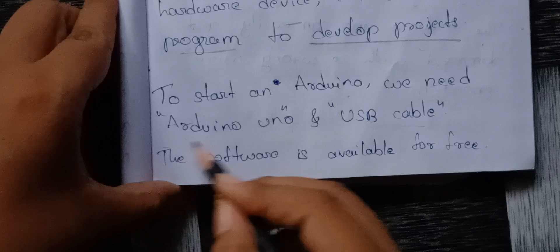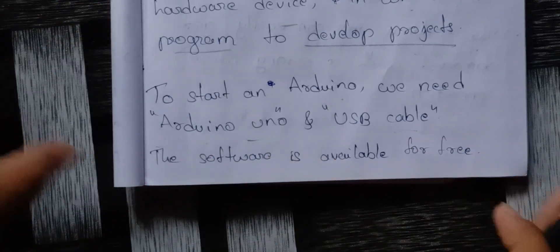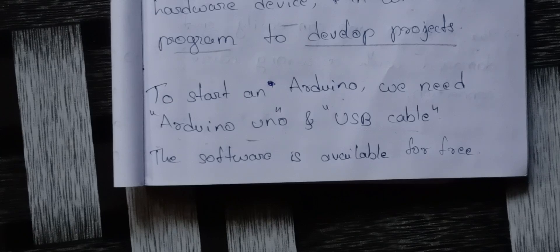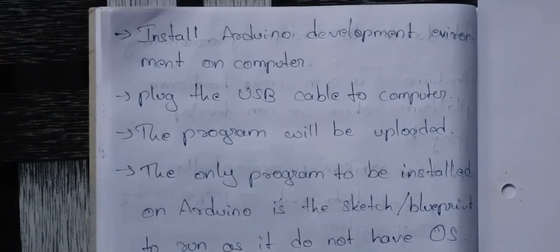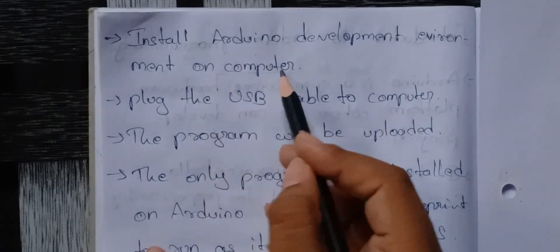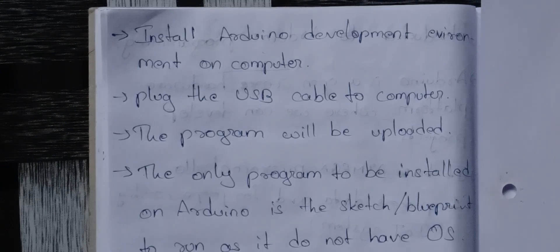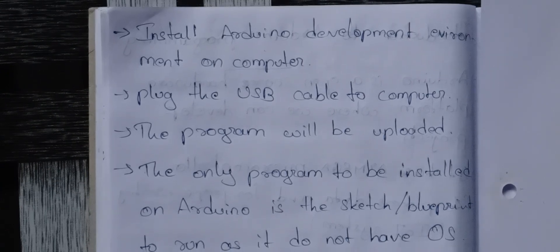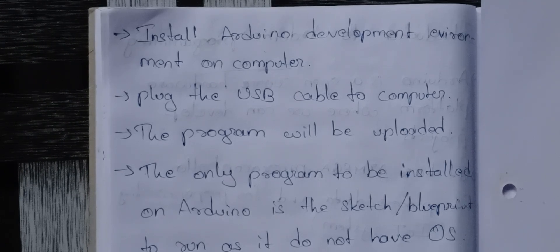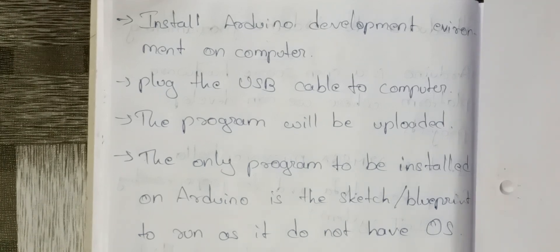To start Arduino, we need an Arduino Uno and a USB cable. The software is available for free since Arduino is open source. First, install the Arduino Development Environment, which is called the IDE — Integrated Development Environment. It provides the interface so we can do programming.